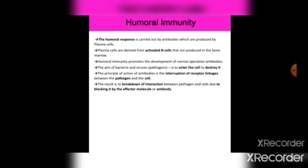Humoral immunity is carried out by antibodies produced by plasma cells. Plasma cells are derived from activated B cells that are produced in the bone marrow, where they mature. Humoral immunity promotes the development of antibodies against bacteria, viruses, and other pathogens. The aim of pathogens is to enter cells and destroy them. The principle of antibody action is the interaction or receptor linkage between pathogens and cells. Antibodies break this linkage between pathogens and cells by blocking it through the effect of antibody molecules.